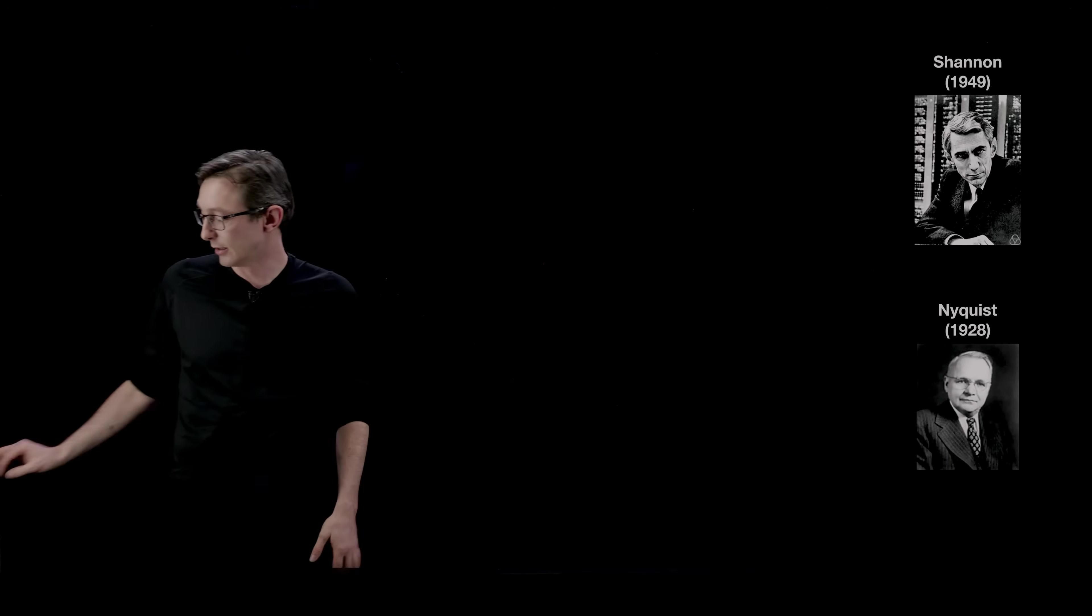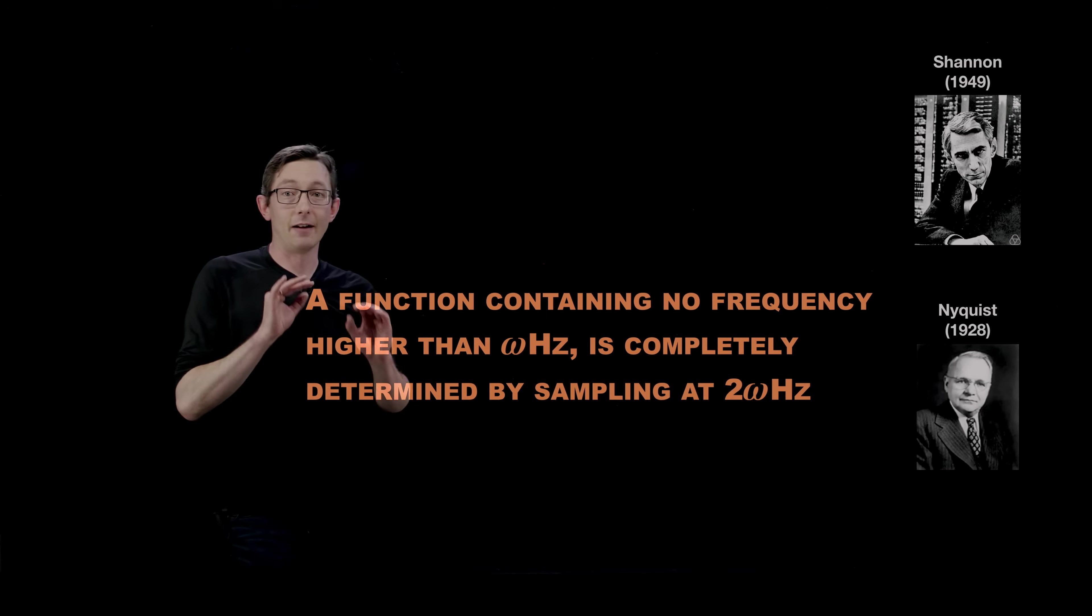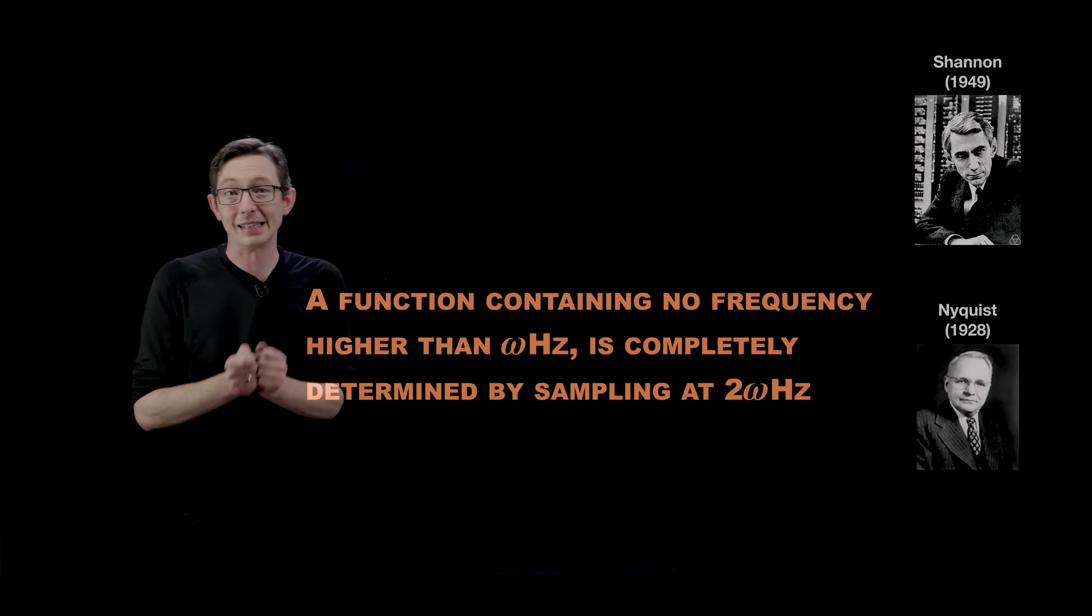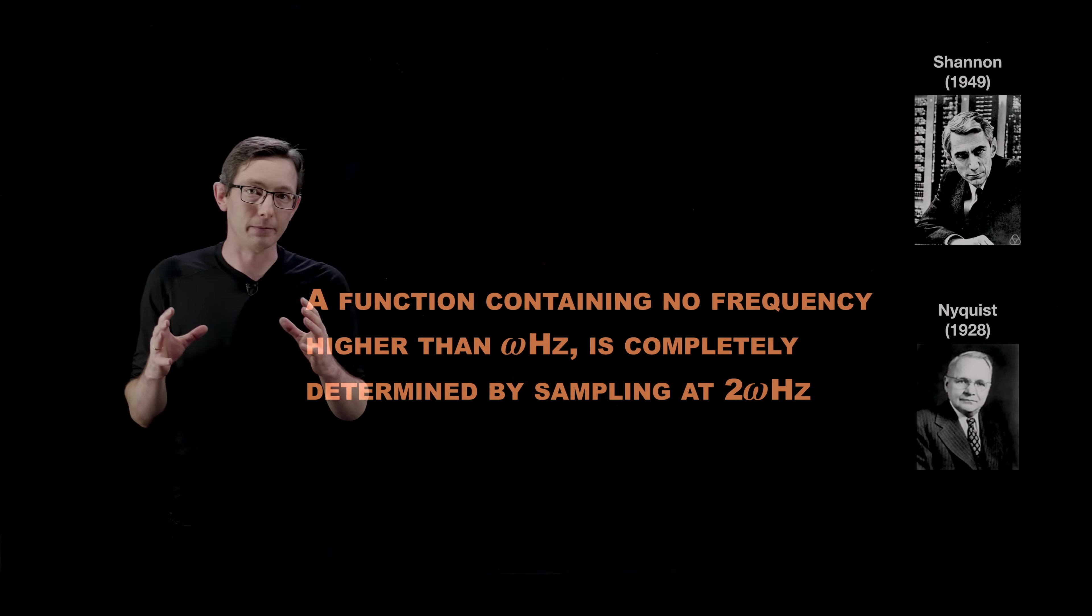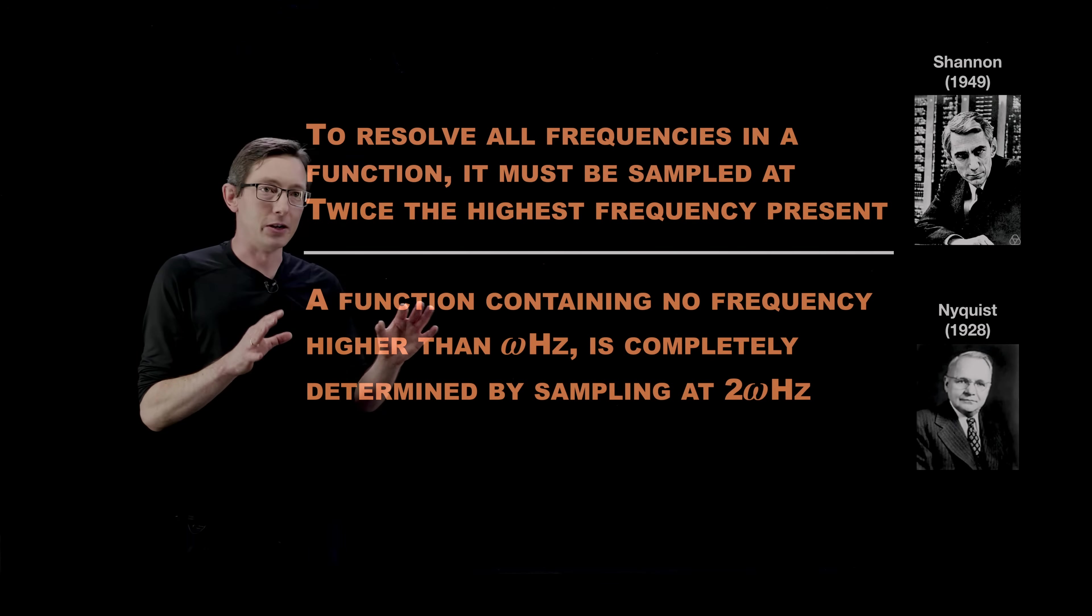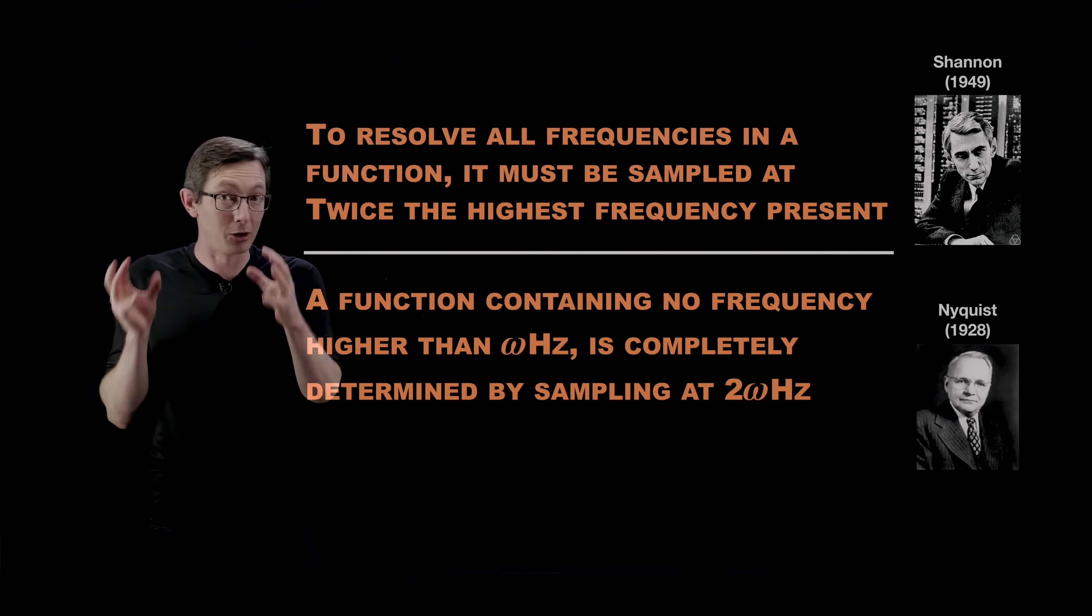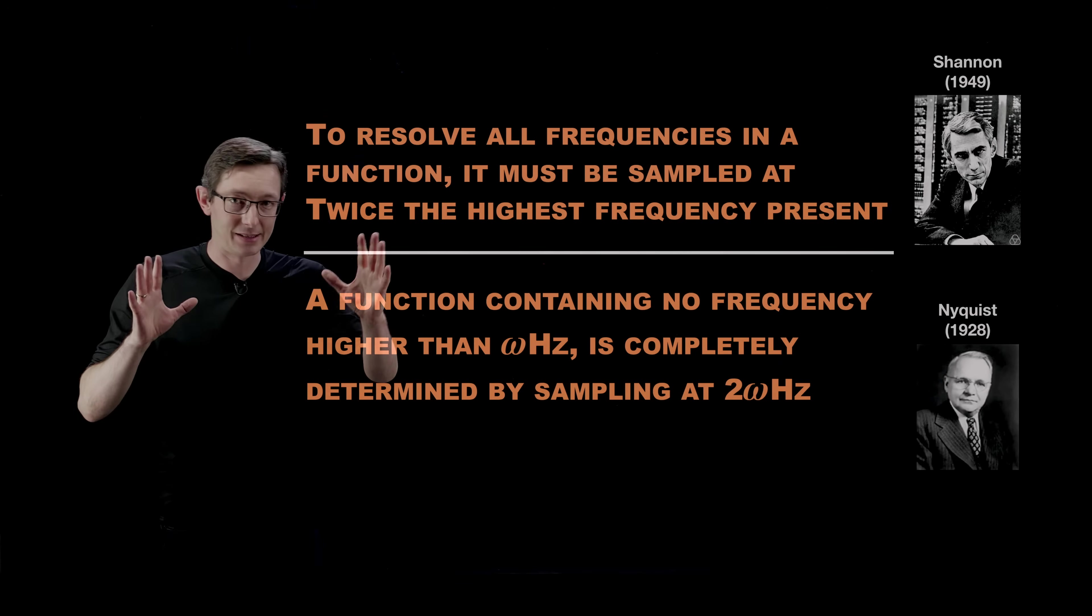And so I want to walk you through what they say the Shannon-Nyquist sampling theorem is and then how we can interpret it today practically. So in words, the sampling theorem says that a function containing no frequency higher than omega measured in hertz is completely determined by sampling that function at 2 omega, again, measured in hertz. So if you have a function, and I'm actually going to say this another way. I want to flip it also. If you have a function and you want to perfectly represent that function, you want to perfectly resolve all of its frequency content perfectly, then you have to sample that function at twice its highest frequency. So I'll say this a couple ways.